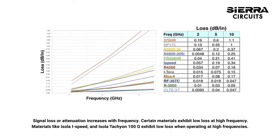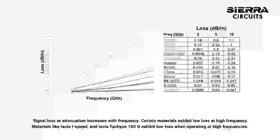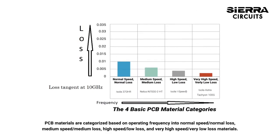Signal loss or attenuation increases with frequency, and certain materials exhibit low loss at high frequencies. Materials like Isola ICE Speed and Isola Tachyon 100G exhibit low loss at high frequencies. PCB materials are categorized by operating frequency as: normal speed, normal loss; medium speed, medium loss; high speed, low loss; and very high speed, very low loss.